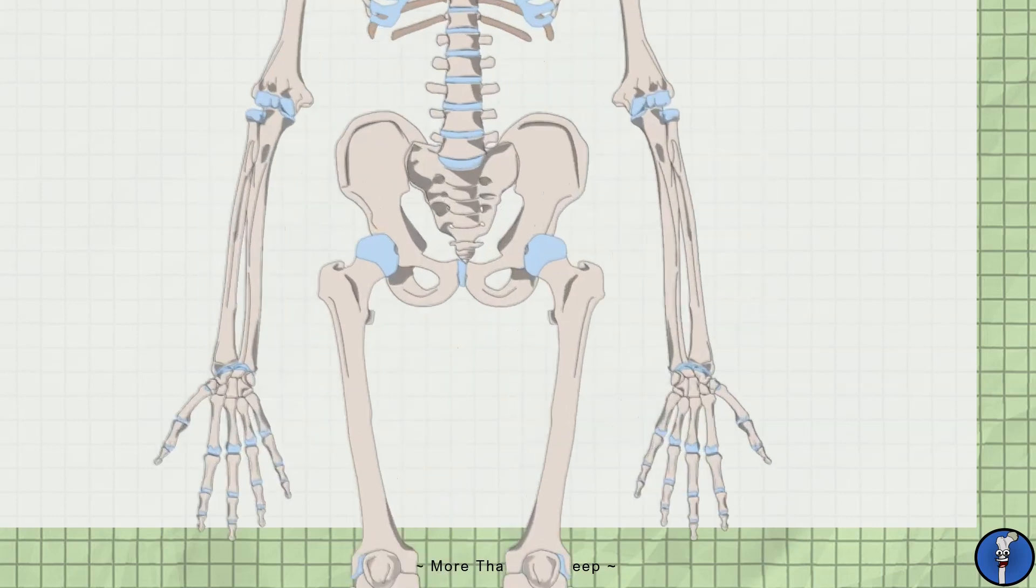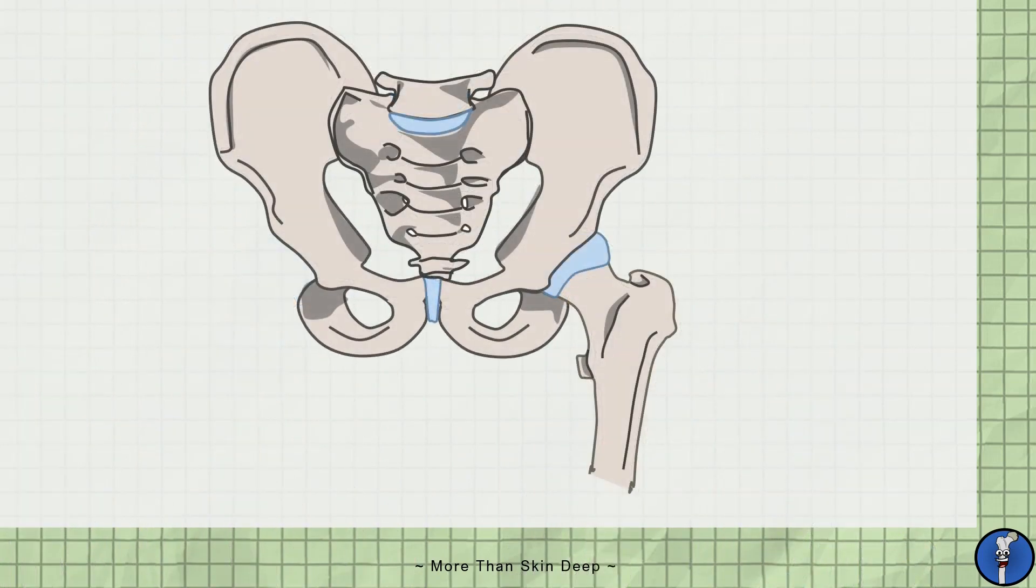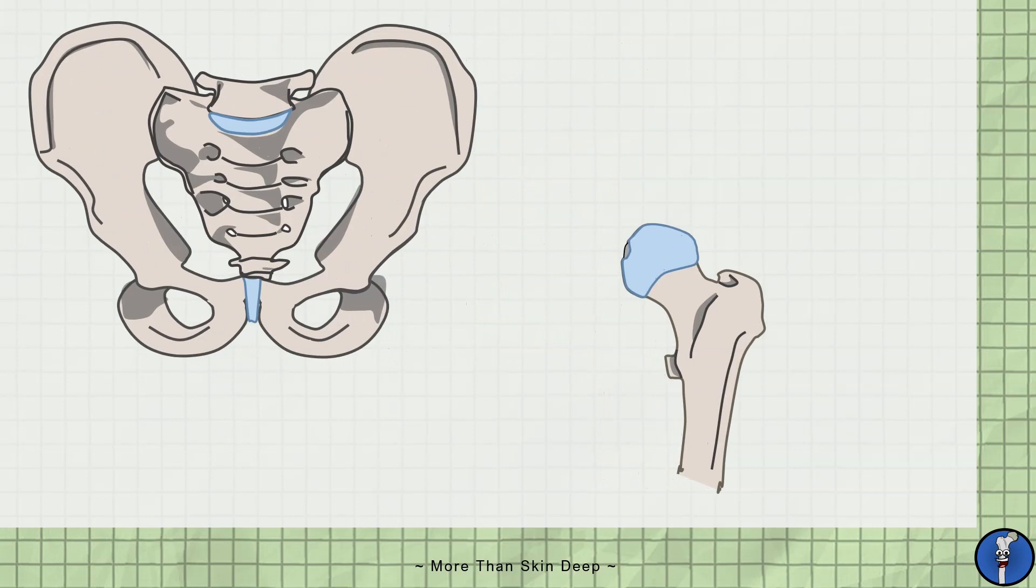The hip joint is an articulation between the head of the femur and the acetabulum of the pelvis. Let's take a look at the femur first. The head is round and covered with smooth articular cartilage. It is this that moves against the head of the pelvis in the hip joint.